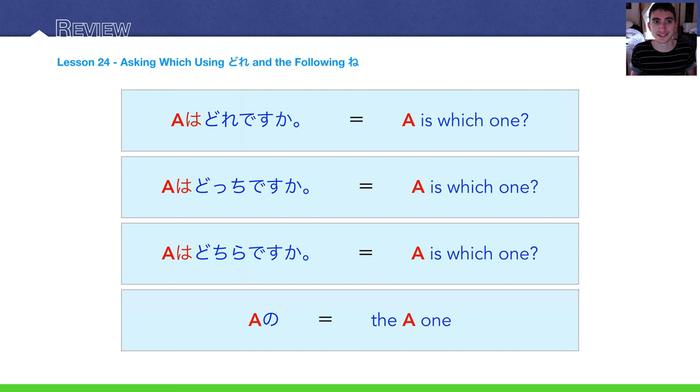Lesson 23, asking for descriptions using donna. Remember, donna means what kind of. It's a question, what kind of. Kanojo wa donna hito desu ka? What kind of person desu ka? Is she? What kind of person is she?